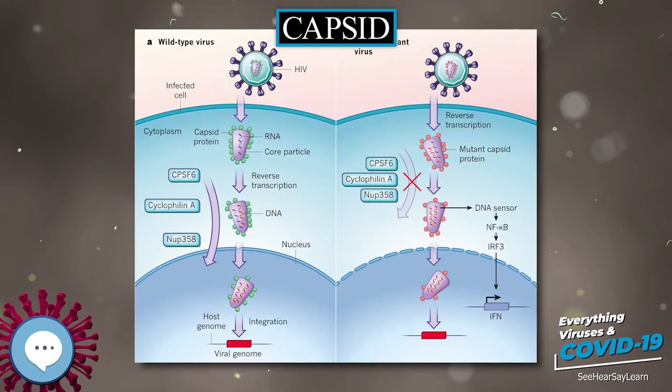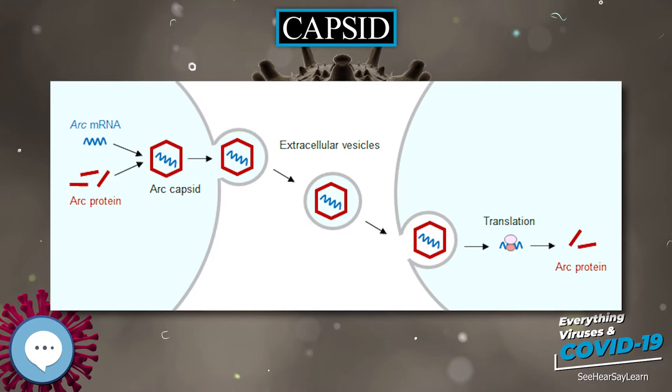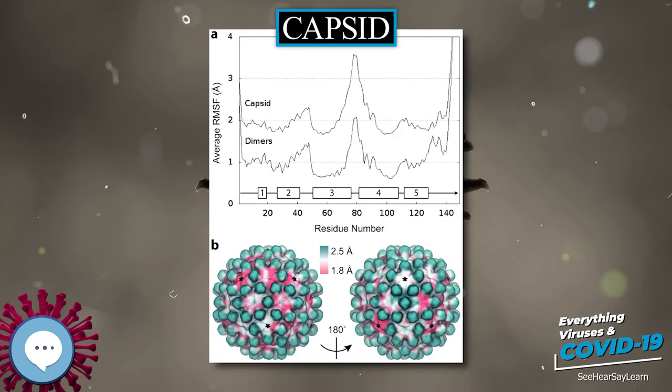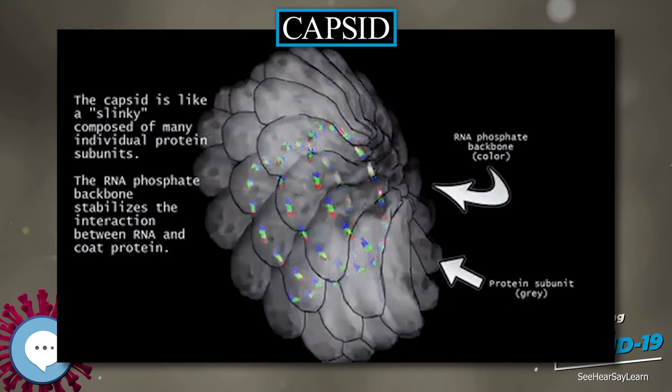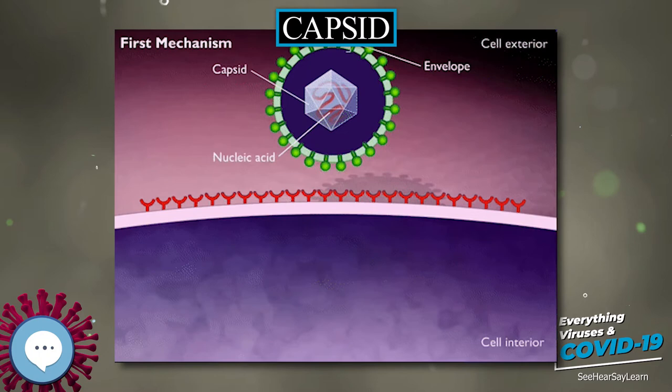Structural analyses of major capsid protein (MCP) architectures have been used to categorize viruses into lineages. For example, the bacteriophage PRD1, the algovirus Paramecium Bursaria Chlorella virus PBCV1, Mimivirus, and the mammalian adenovirus have been placed in the same lineage, whereas tailed double-stranded DNA bacteriophages (caudovirales) and herpesvirus belong to a second lineage.